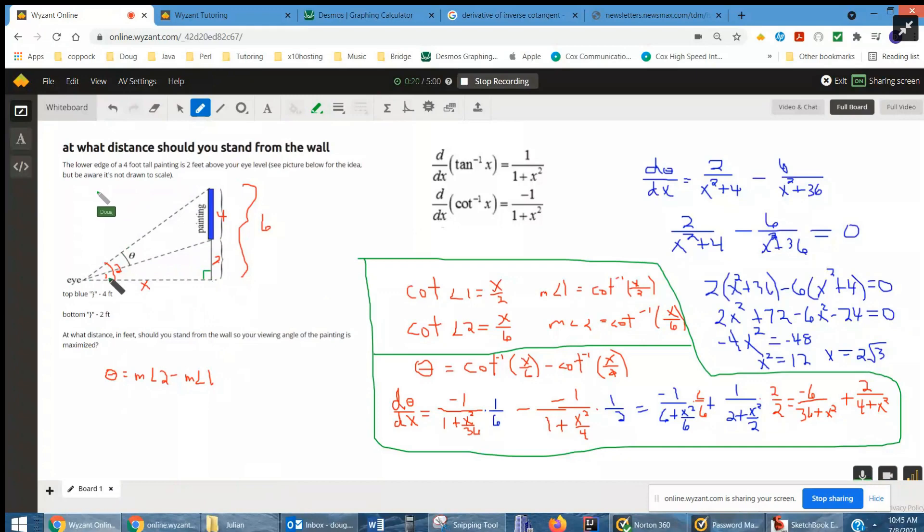And if I label this little angle right here as 1 and the bigger angle is angle 2, then theta is equal to the measure of angle 2 minus the measure of angle 1. That's the angle addition postulate.